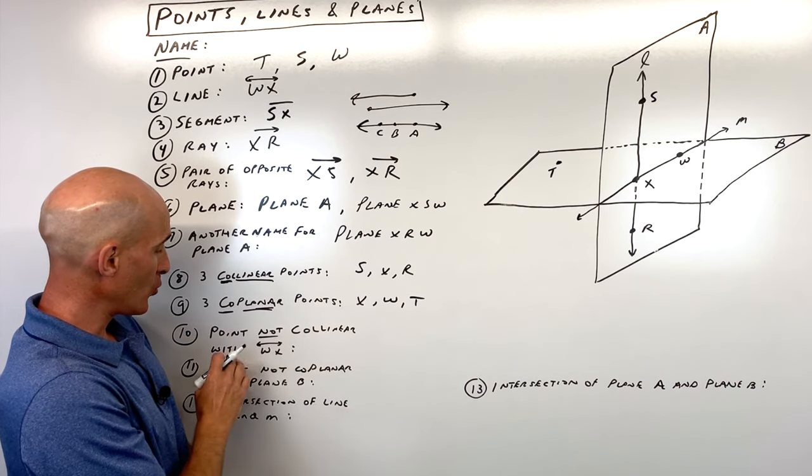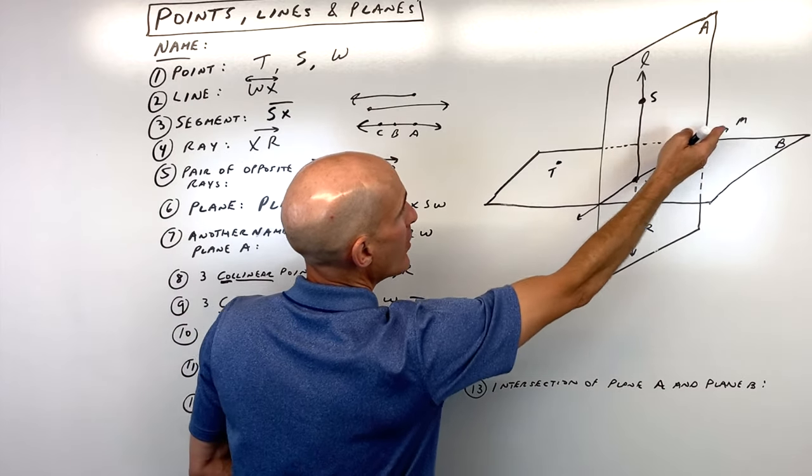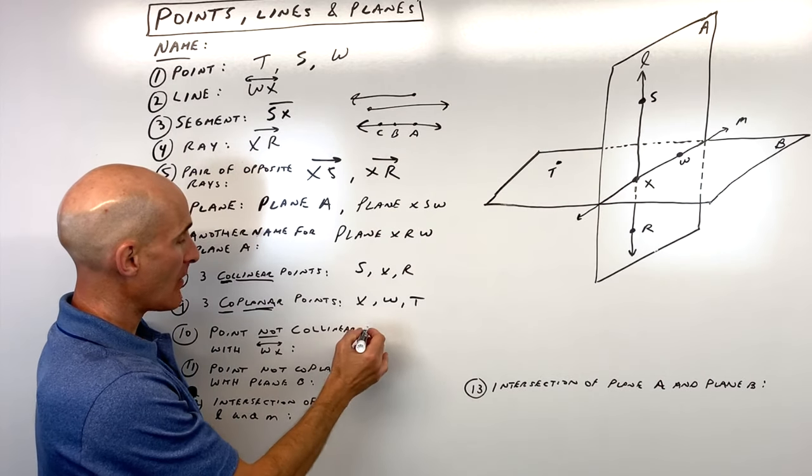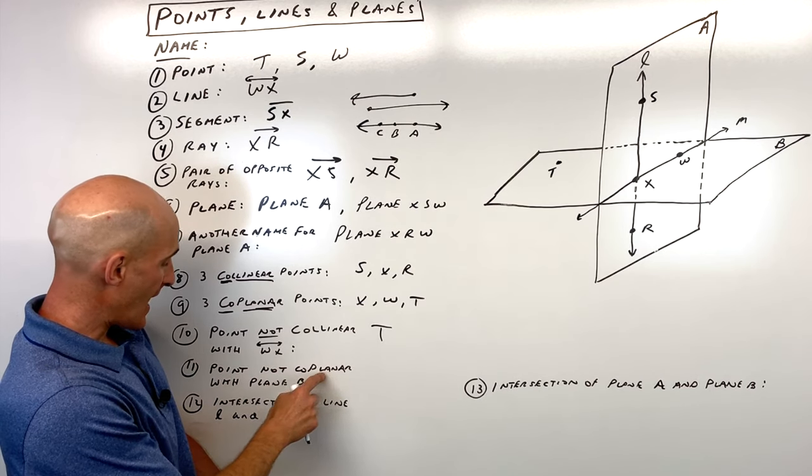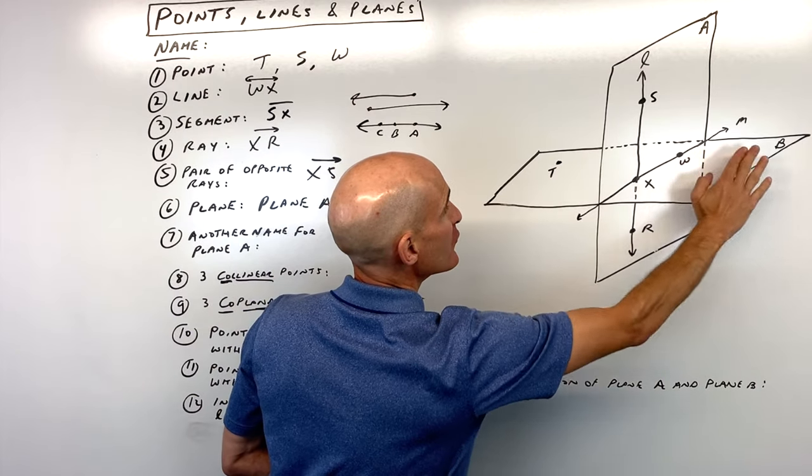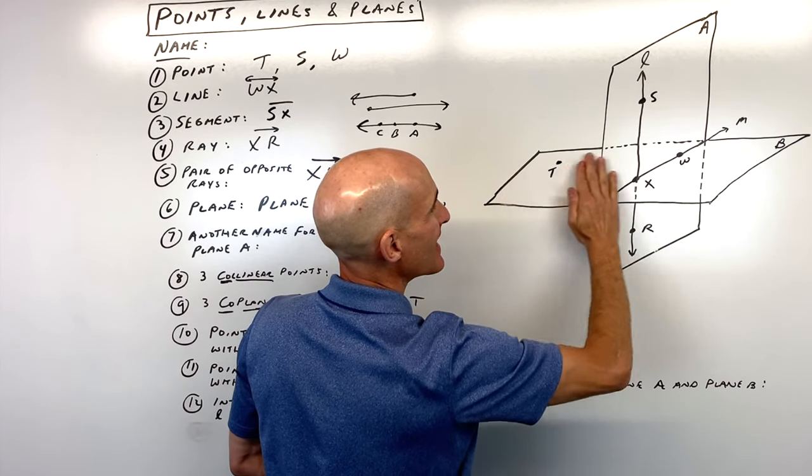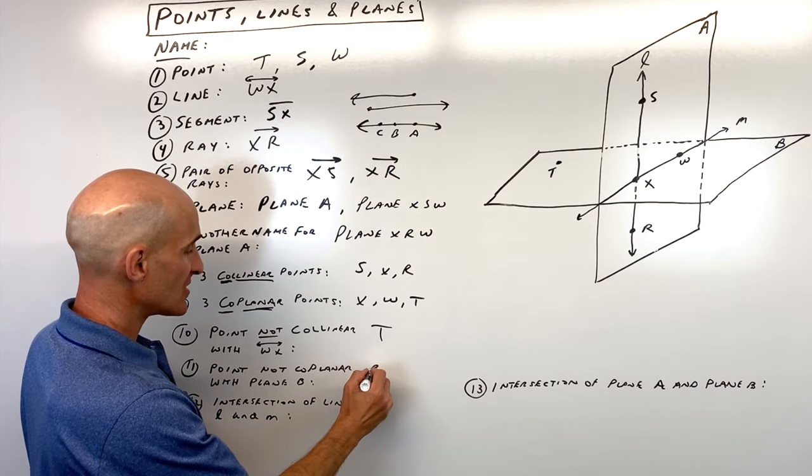A point that is not collinear with line WX. So here's line WX, a point that's not on that line. How about point T? That would work. A point that's not coplanar with plane B. So plane B is this flat surface right here, but we want a point that's not in that same plane. We could pick R, or we could pick S. So I'll just say R.